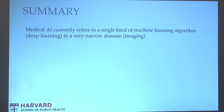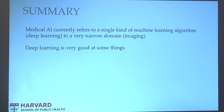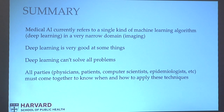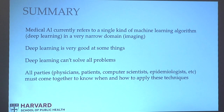To summarize: currently when we say AI, we really mean deep learning, and specifically within the narrow domain of medical imaging — that's where most of the breakthroughs have happened. To counteract the hype: deep learning is really good at medical imaging, and there's good reason to be enthusiastic about it in that domain. But it's not going to solve all of our problems. What I've learned is that we need to bring together all parties to have a conversation — which is what we're doing today — about how to implement these models. Thank you.